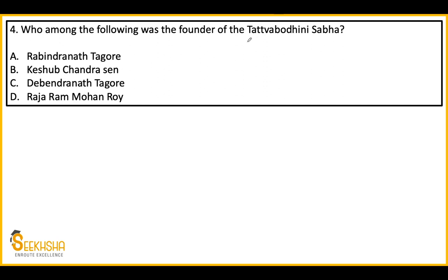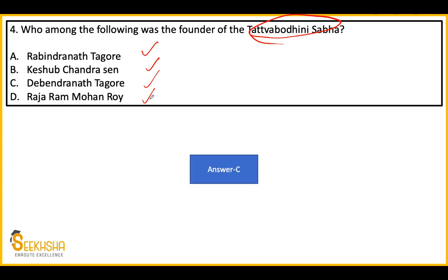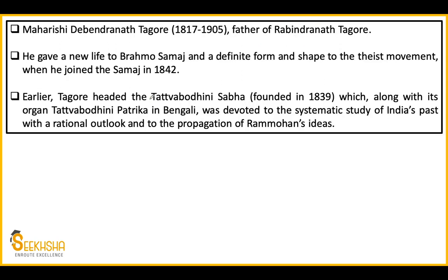Fourth question: who among the following was the founder of Tattab Bodhini Sabha? It's an easy question. Options: A. Rabindranath Tagore, B. Keshav Chandra Singh, C. Debendranath Tagore, D. Raja Ram Mohan Roy. Who was the founder of Tattab Bodhini Sabha? The answer is option C — Debendranath Tagore. Maharishi Debendranath Tagore was the father of Rabindranath Tagore, who wrote our national anthem.